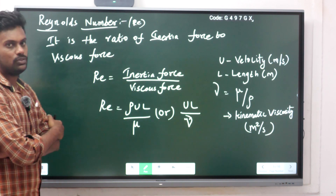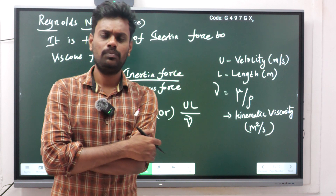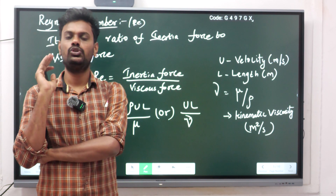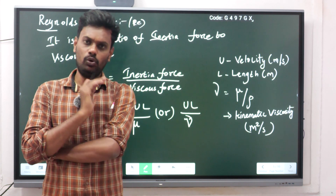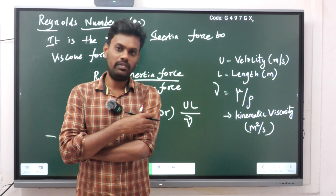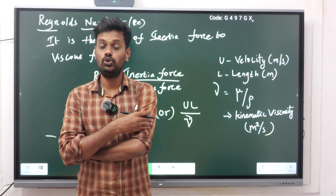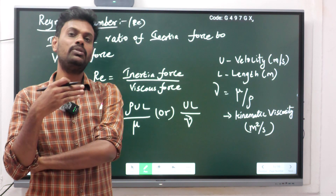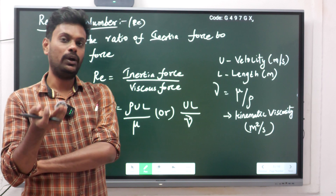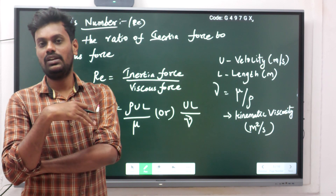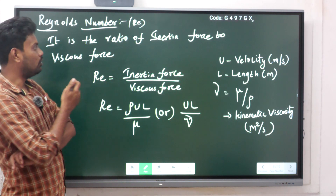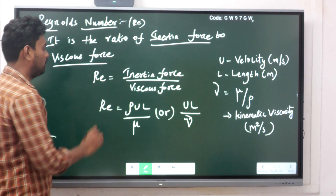The Reynolds number is a ratio of inertia force to viscous force. Suppose there is a fluid flowing over any surface — consider oil and water both flowing. Oil has more viscosity than water, so the velocity of water is higher than that of oil. The ratio of inertia (mass times acceleration, related to velocity) to viscosity is the Reynolds number — it describes the relationship between inertia and viscosity.